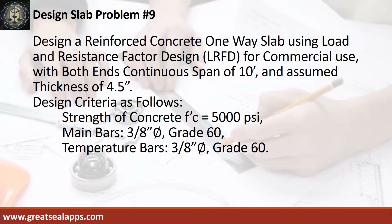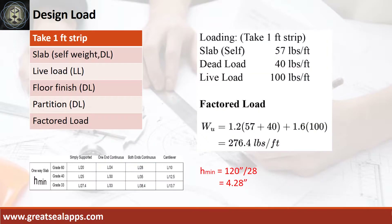Design criteria as follows: strength of concrete 5,000 PSI; main bars 3/8-inch diameter, grade 60; temperature bars 3/8-inch diameter, grade 60. The uniform load for a 4.5-inch thick slab is 57 pounds per square foot. A commercial live load is 100 pounds per square foot. Other dead load like floor finish and partition is 40 pounds per square foot, for a total factored load of 276.4 pounds per square foot.